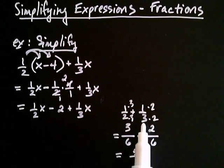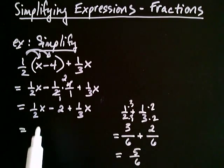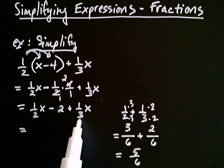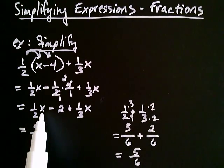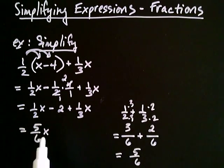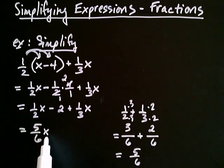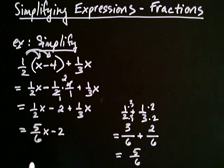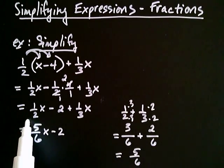One half plus one third is five sixths. I use that over here because I was adding the coefficients, so one half plus one third gives five sixths, and I keep the x attached — whenever you combine like terms, you keep what they have in common, in this case the x. But I still have the minus two. These two remaining terms are not like terms, because one contains an x and the other doesn't, so that's as far as we can go.